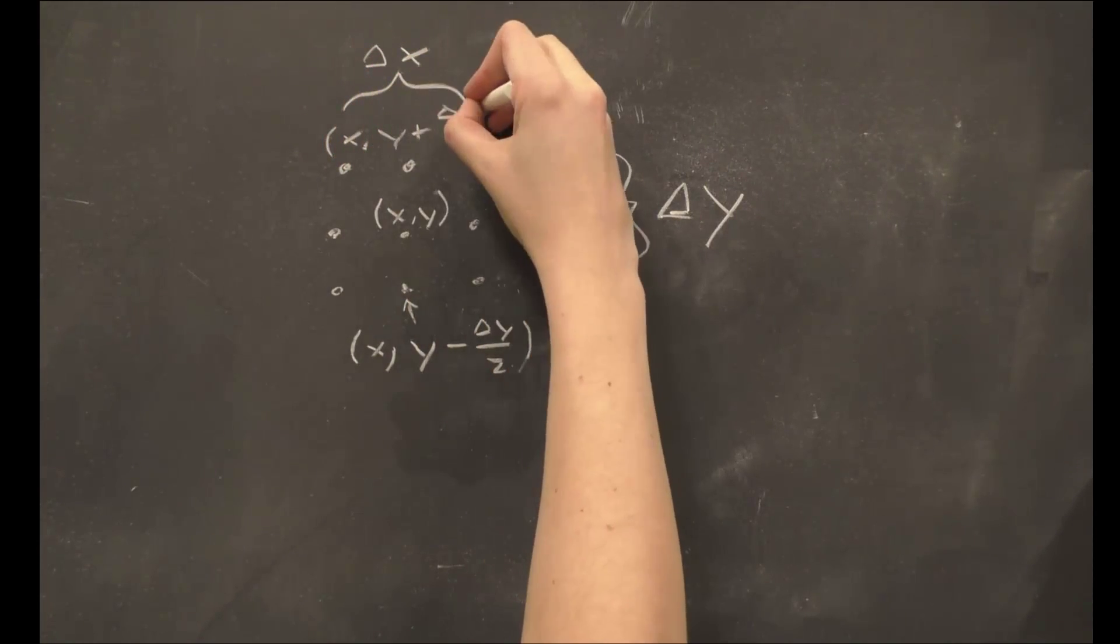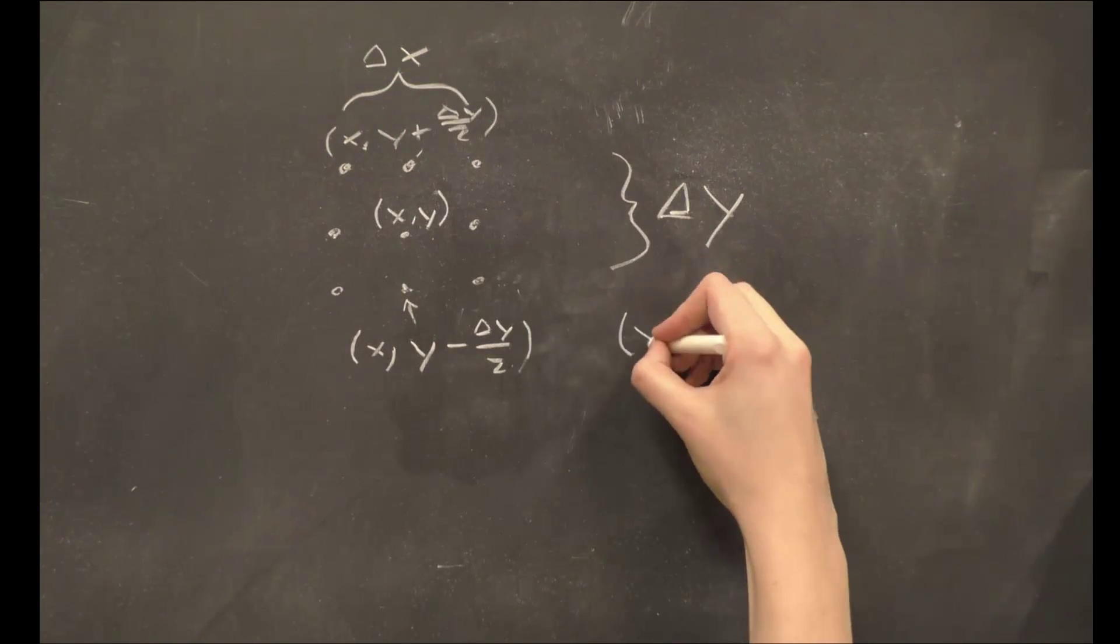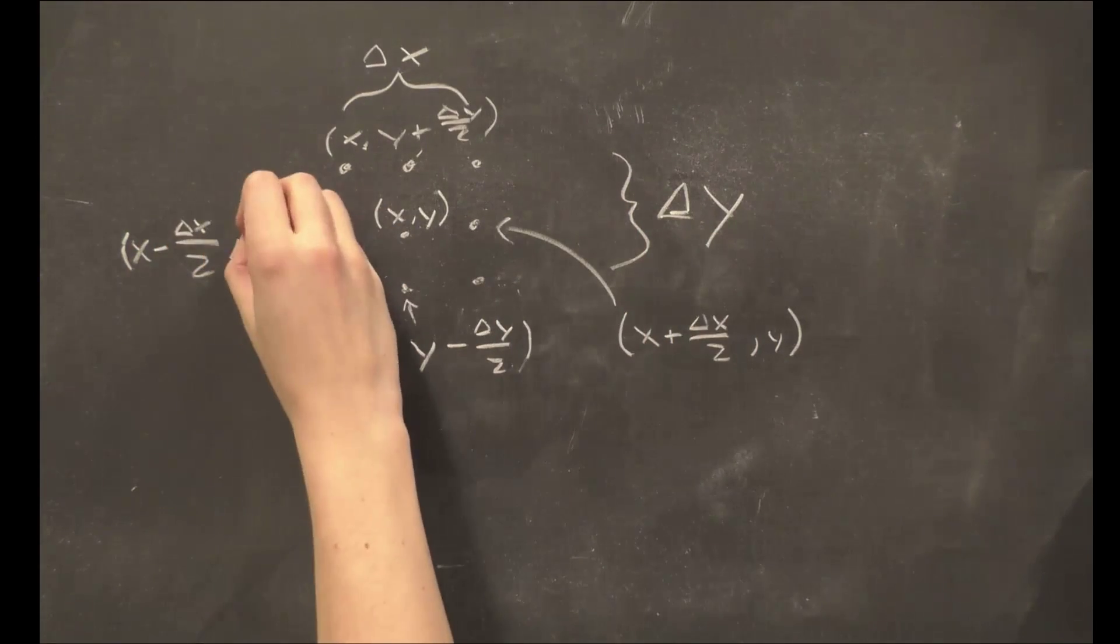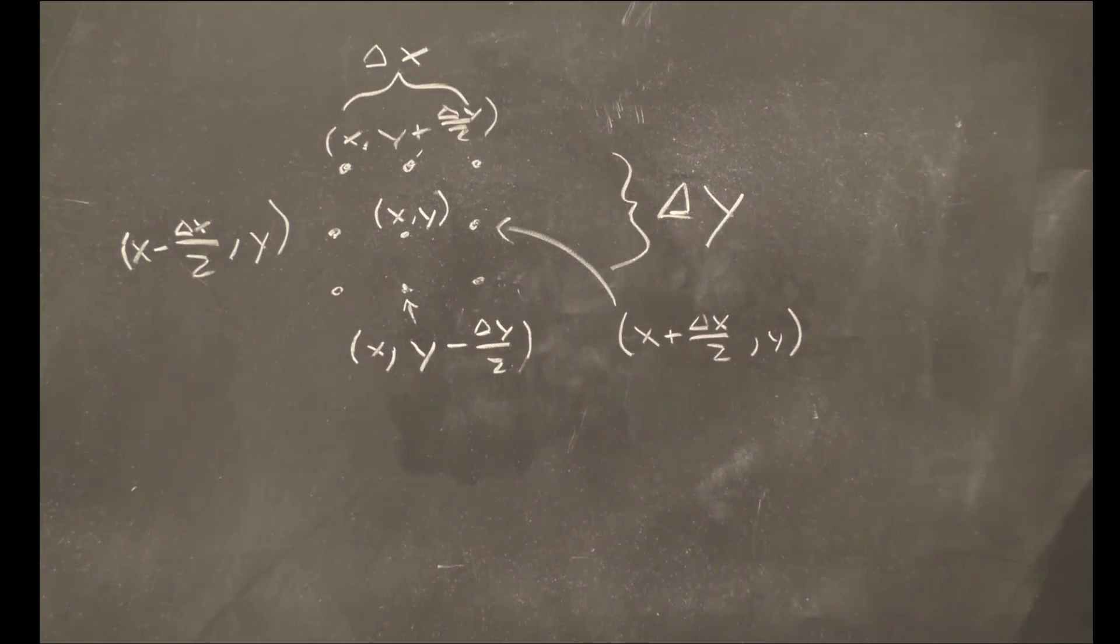We will examine four points: x y minus delta y over 2, x y plus delta y over 2, x plus delta x over 2 y, and x minus delta x over 2 y.